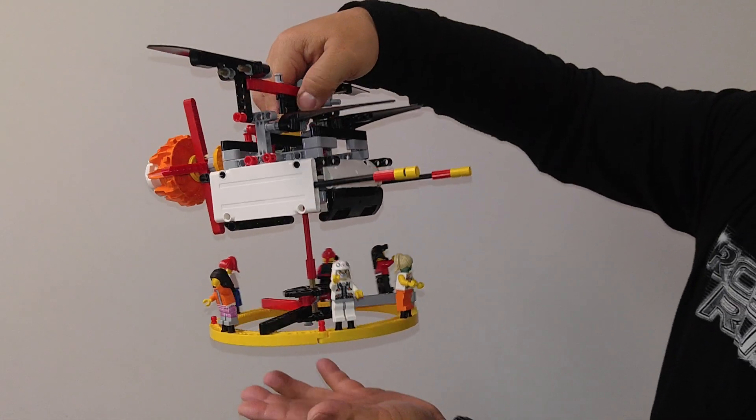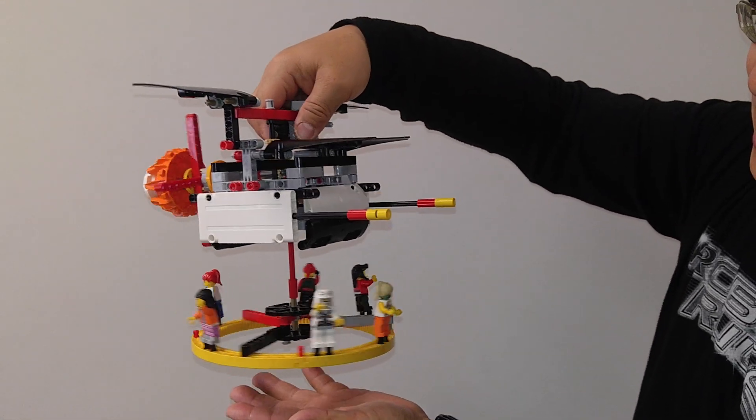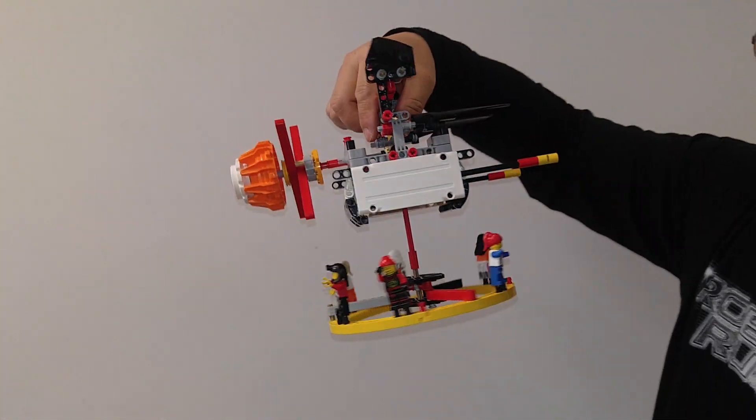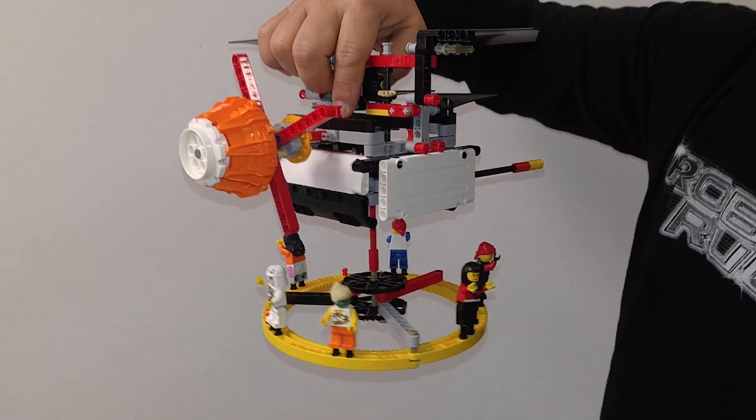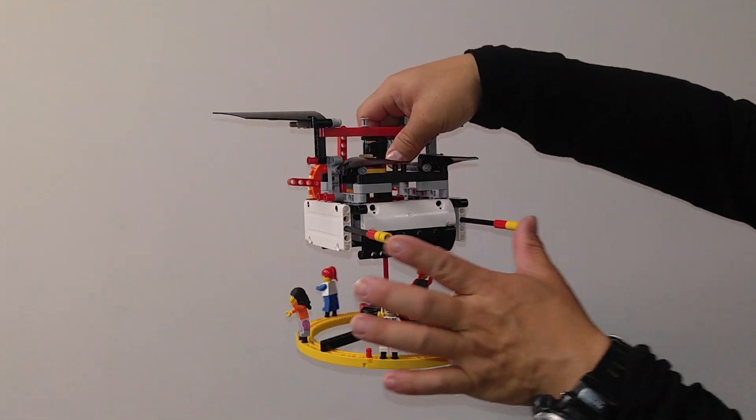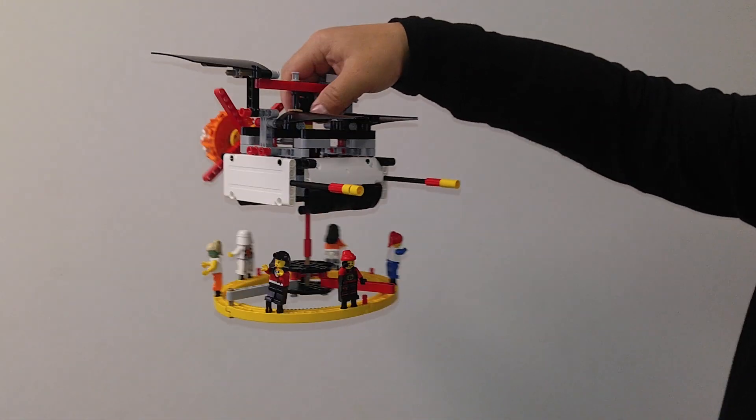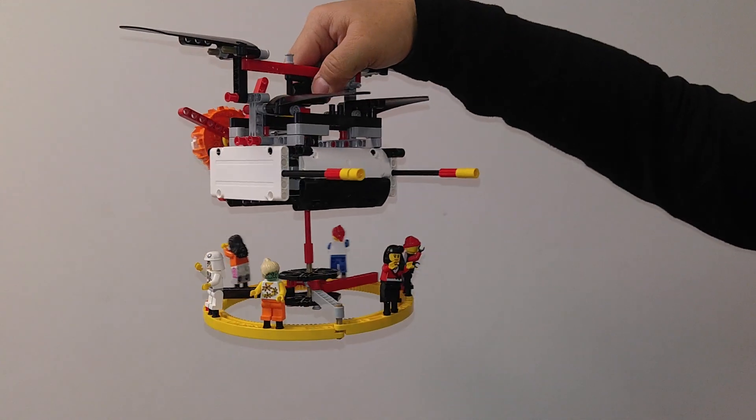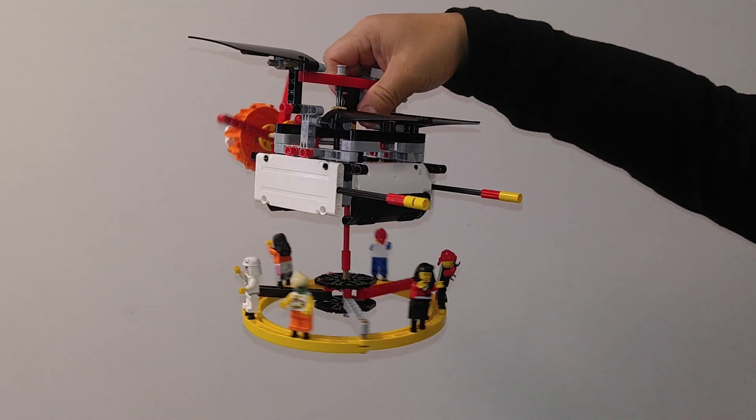The bottom rotor is the one to lift the UFO in the air. This back propeller drives the UFO forward. Those two are the laser cannons. They shoot out the lasers. Oh, laser guns.